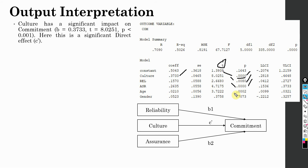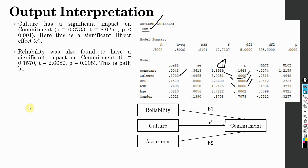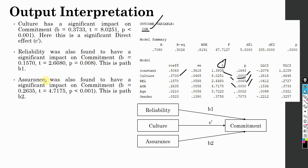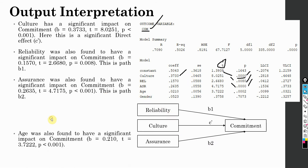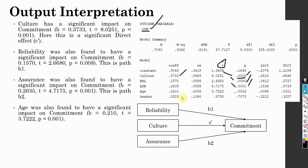Age was found to have a significant impact on commitment, meaning age is a covariate affecting the outcome variable. Reliability was also found to have a significant impact on commitment. Assurance was also found to have a significant impact. Finally, age was also found significant: beta 0.210, p-value 0.002, and the effect is positive — meaning that with increasing age, there is higher commitment.